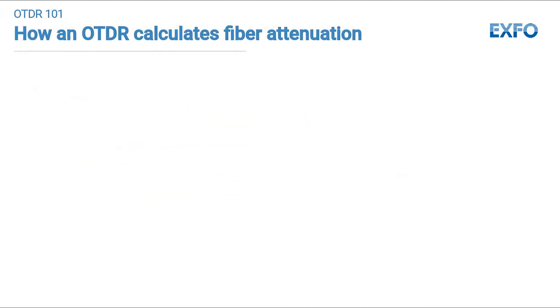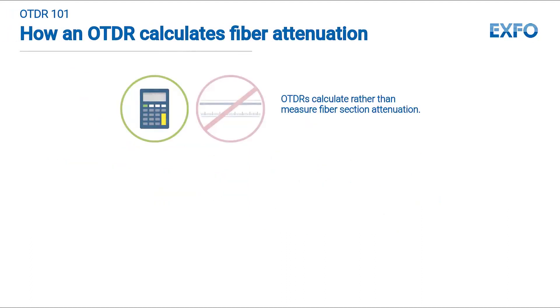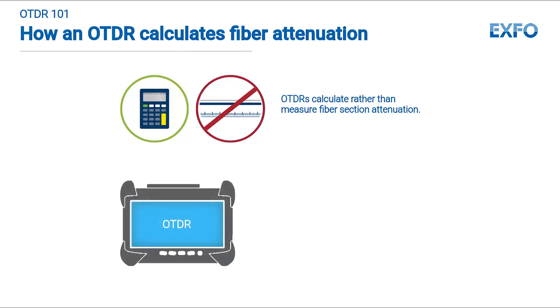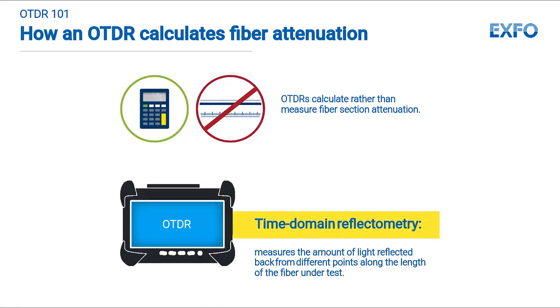In an OTDR, fiber section attenuation is typically calculated rather than directly measured. The OTDR uses a technique called time domain reflectometry to measure the amount of light that is reflected from different points along the length of the fiber being tested.